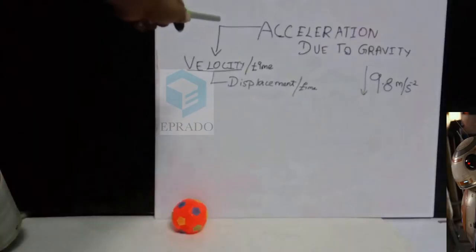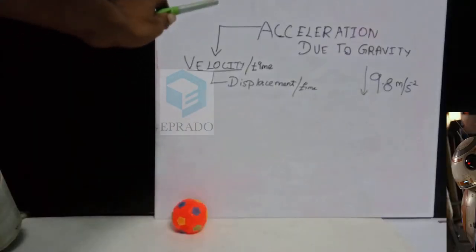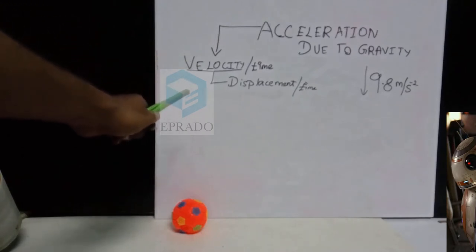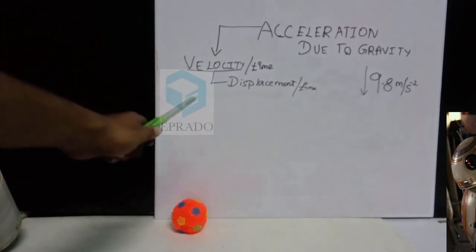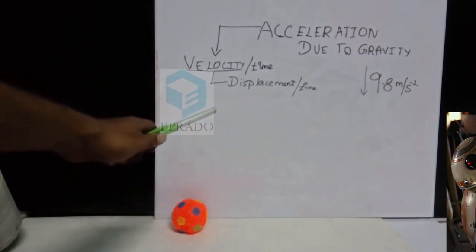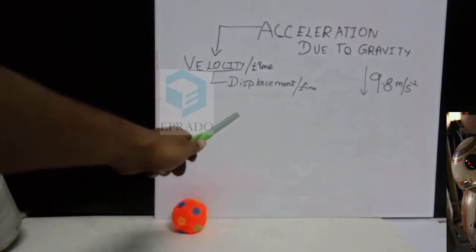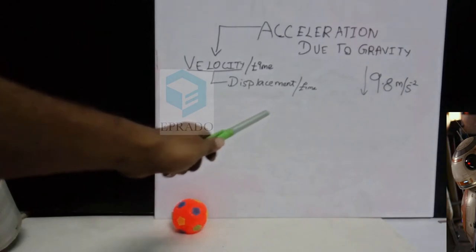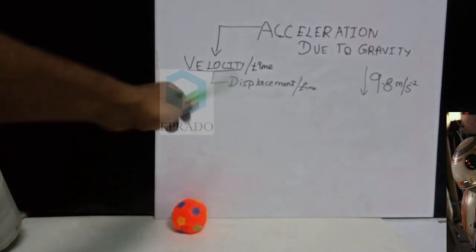Acceleration is the change in velocity with respect to time. What is velocity? Velocity is the change in displacement with respect to time. Then what is displacement?